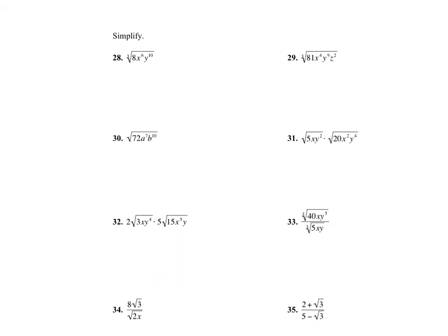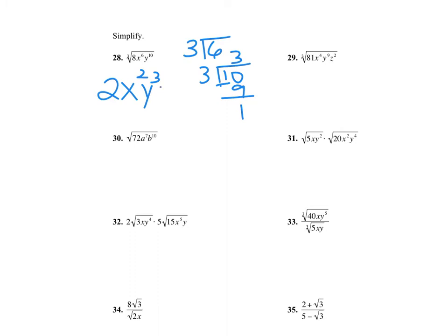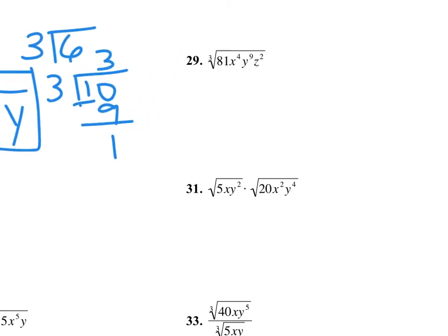We're going to simplify all of these. Start by taking the cube root of 8, which is 2. When taking the cube root of x to the 6th, divide 3 into the exponent — 3 goes into 6 exactly 2 times. Then 3 goes into 10 three times with 1 remainder, so it's y cubed with one y left over at the end. Don't forget the little 3 — it's the cube root, not the square root.